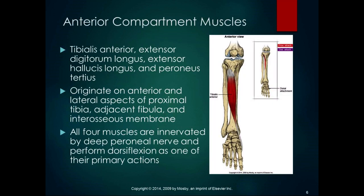The anterior compartment muscles include the tibialis anterior, extensor digitorum longus, extensor hallucis longus, and peroneus tertius. Peroneus tertius courses anteriorly — anterior to the medial-lateral axis — so it does dorsiflexion like the rest of the anterior compartment muscles, and shares their innervation. All four originate on the anterior and lateral aspects of the proximal tibia, adjacent fibula, and interosseous membrane. All four are innervated by the deep peroneal nerve, and all four perform dorsiflexion as one of their primary actions.